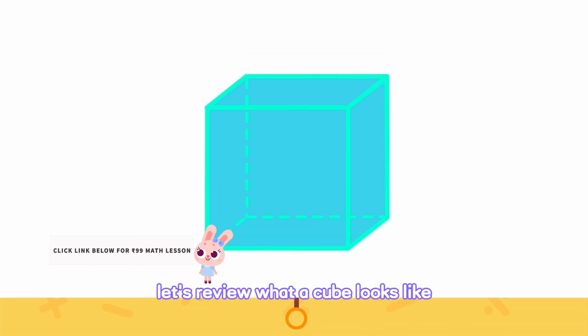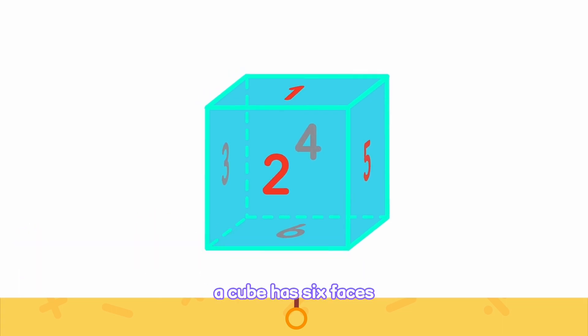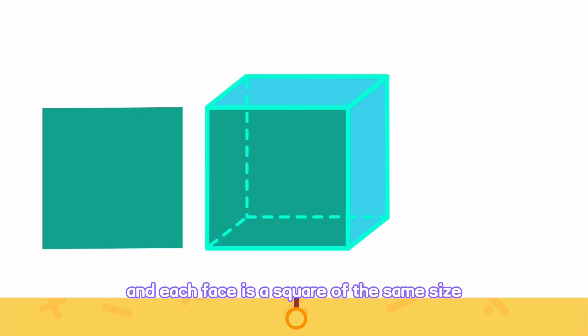Let's review what a cube looks like. A cube has six faces, and each face is a square of the same size.